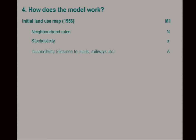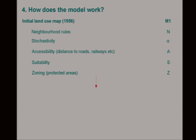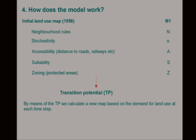You establish your neighbourhood rules. You have a stochastic element — this randomness that Ulam was talking about. You have accessibility, which is usually your distance to roads or your infrastructure networks. Suitability — the background carrying capacity, the capacity of the land to support a land use; you don't get cereal crops on mountaintops. And then you have zoning, which could be your management, your land planning, so protected areas. And you calculate transition potential, which is what allows you to calculate your new map at the next time step.